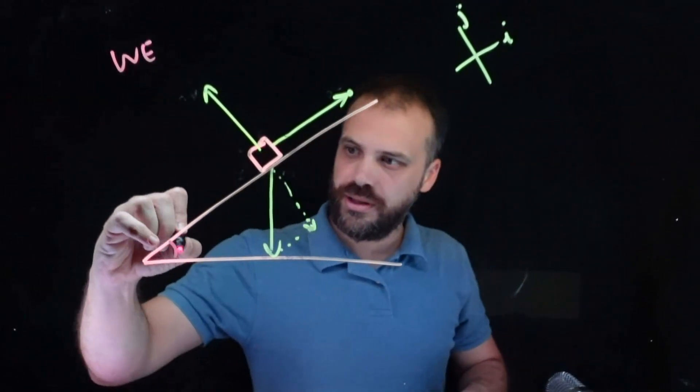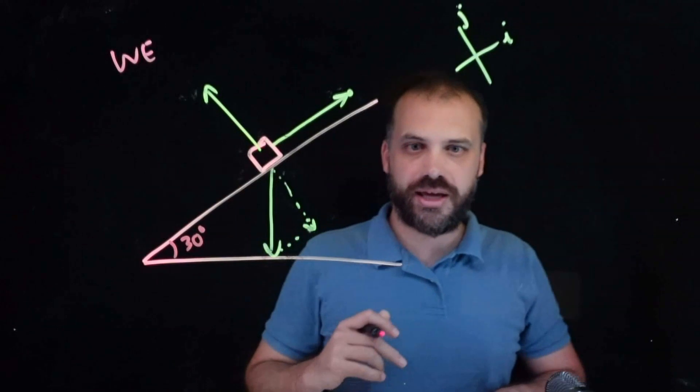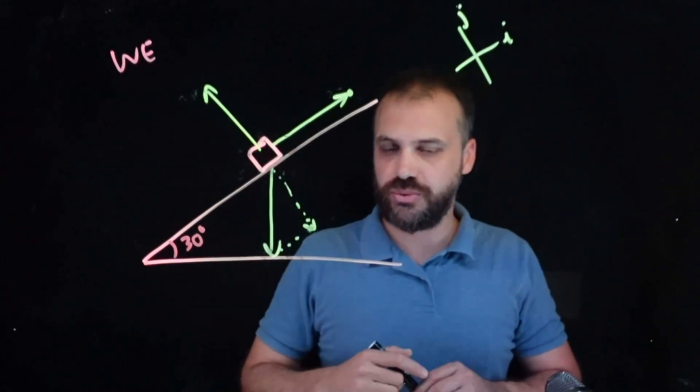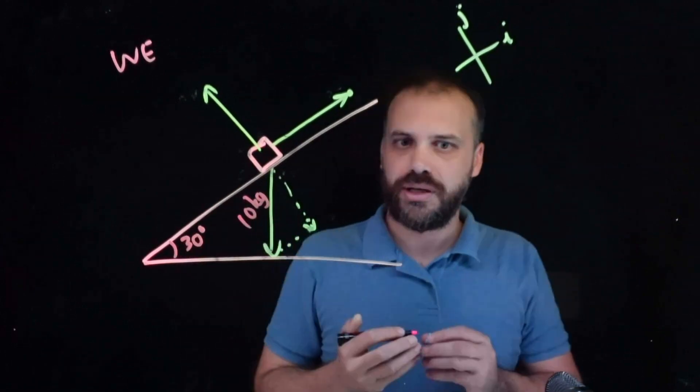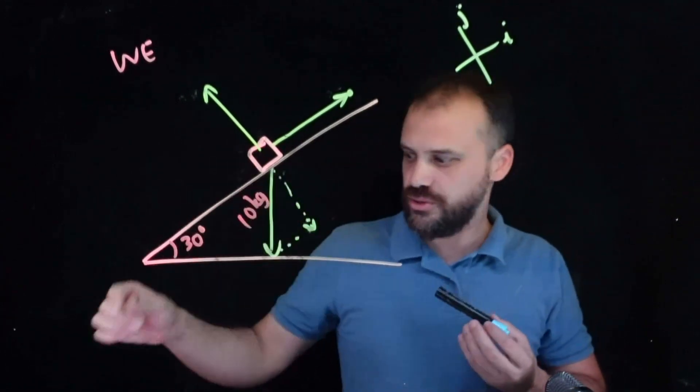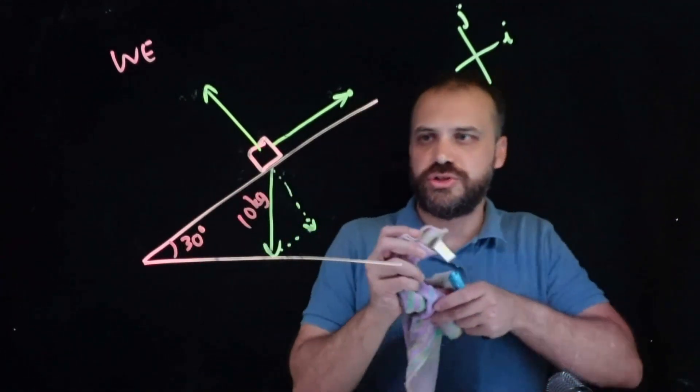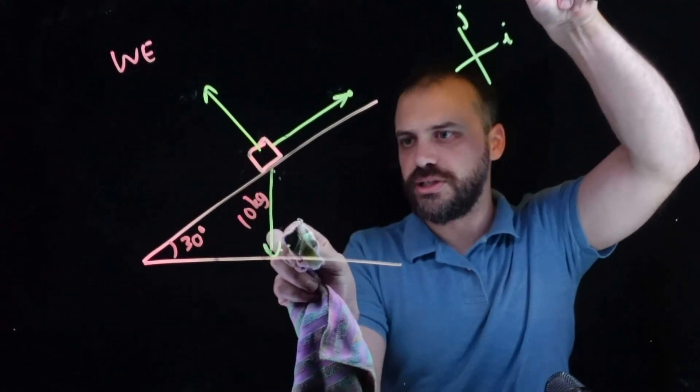It's worked example time. There's a 30 degree angle here, and my object weighs 10 kilograms. Now, breaking this up into i and j components, not useful for what we're trying to do here, so let's get rid of that.